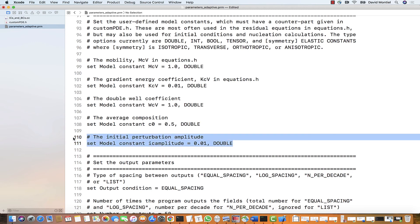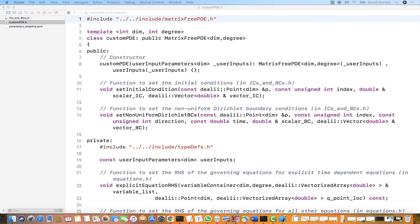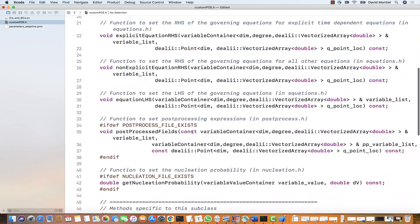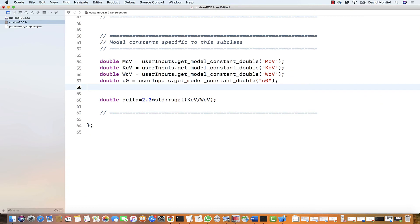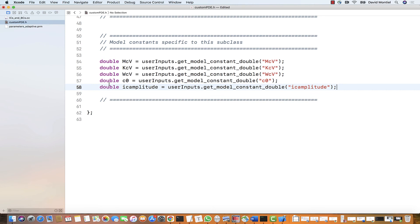And the last thing we need to do in this file is add a constant parameter for the amplitude of the noise that we're going to add to the average concentration in the initial conditions. Since we changed some of the constants in the parameters file, let's go to custompde.h next and define these as variables that we will read from the user inputs. We remove cn and r0 and also we don't need delta and we add ic amplitude.